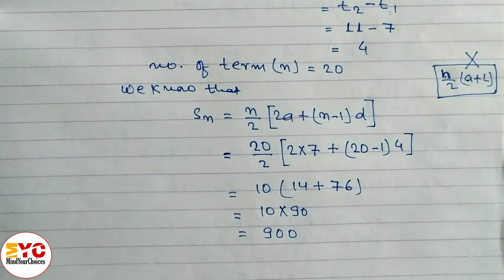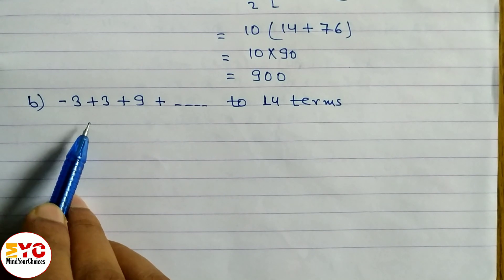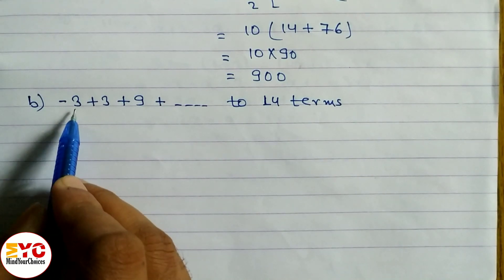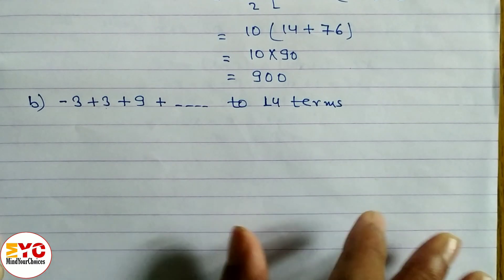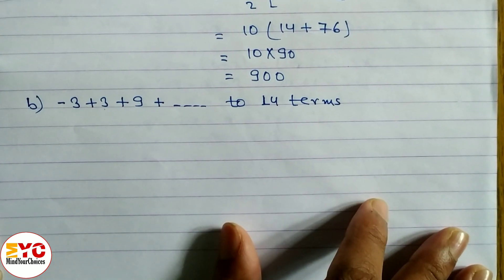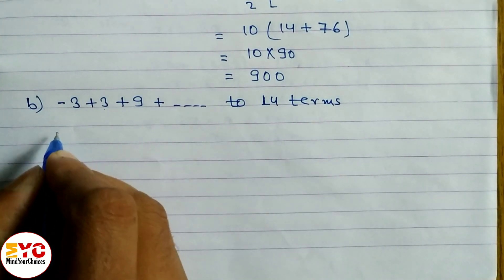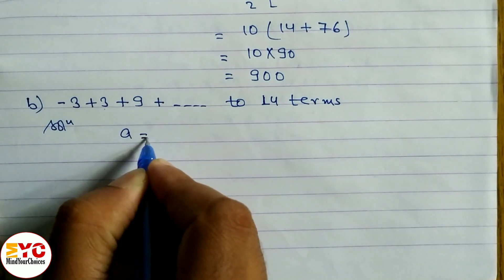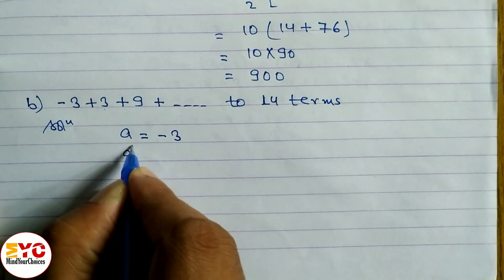Now look at question number B. This question is similar to question A: −3 plus 3 plus 9, up to 14 terms. Here n is equal to 14. Let's start: the first term a is equal to −3.